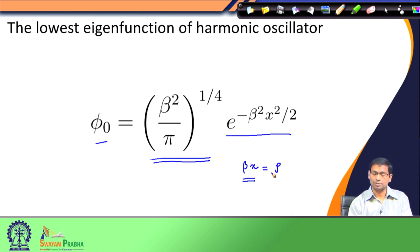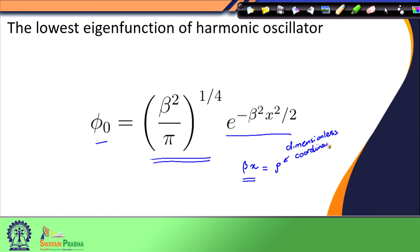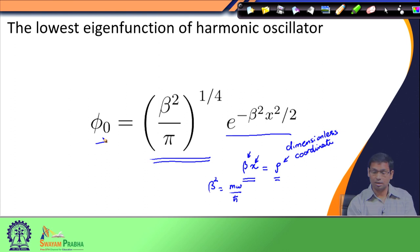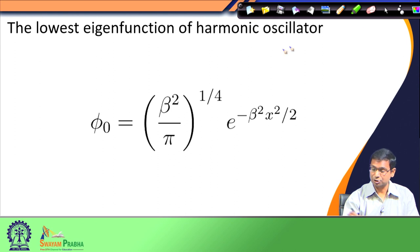We define this dimensionless quantity rho = beta*x as a new dimensionless coordinate, as opposed to x which is a coordinate with a particular dimension. How are we going from a dimensional coordinate to a dimensionless coordinate? By multiplying x with beta, where beta squared equals m*omega divided by h-bar. By multiplying this factor with the dimensional coordinate x we get this dimensionless coordinate. We will redefine the lowest wave function of the harmonic oscillator in the dimensionless coordinate.